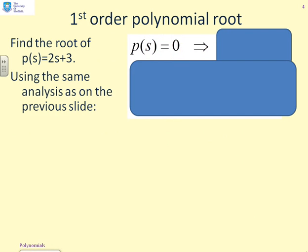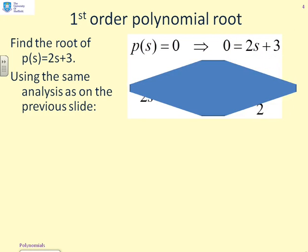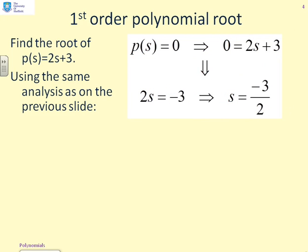What we do first is we set p(s) equal to 0. That gives us 0 equals 2s plus 3. Now I want to solve that. We put the 3 on the other side and we get 2s equals minus 3, and then we can solve for s to give us minus 3 over 2. So hopefully you're all happy that this is straightforward.